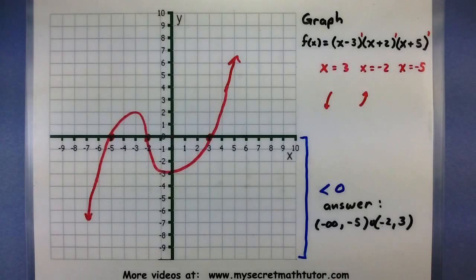So in these intervals, our polynomial is less than 0. Now let's go ahead and look at one more example just to make sure that we can get more practice.